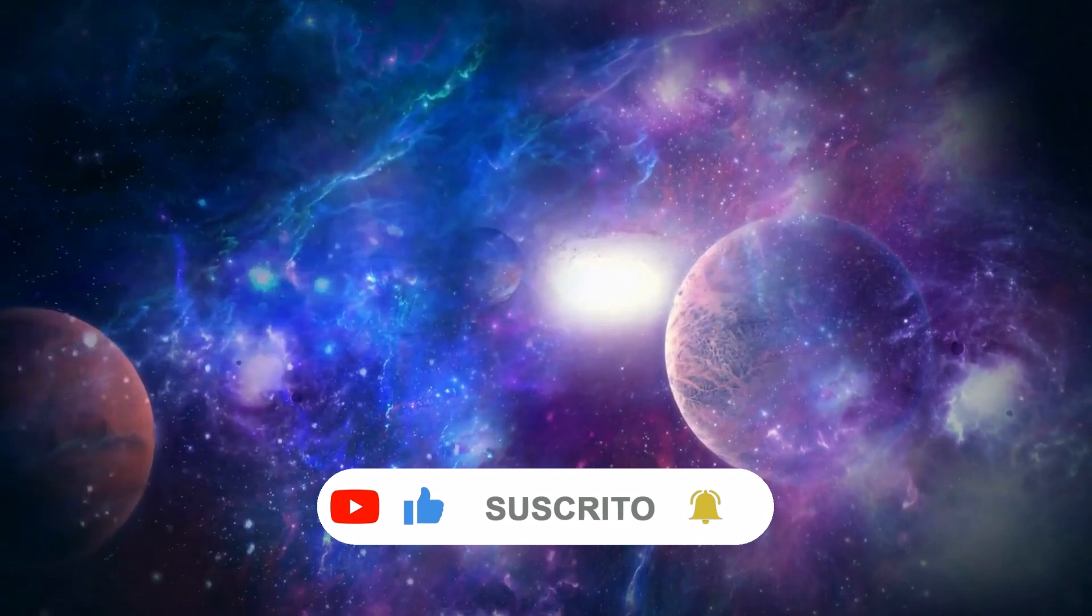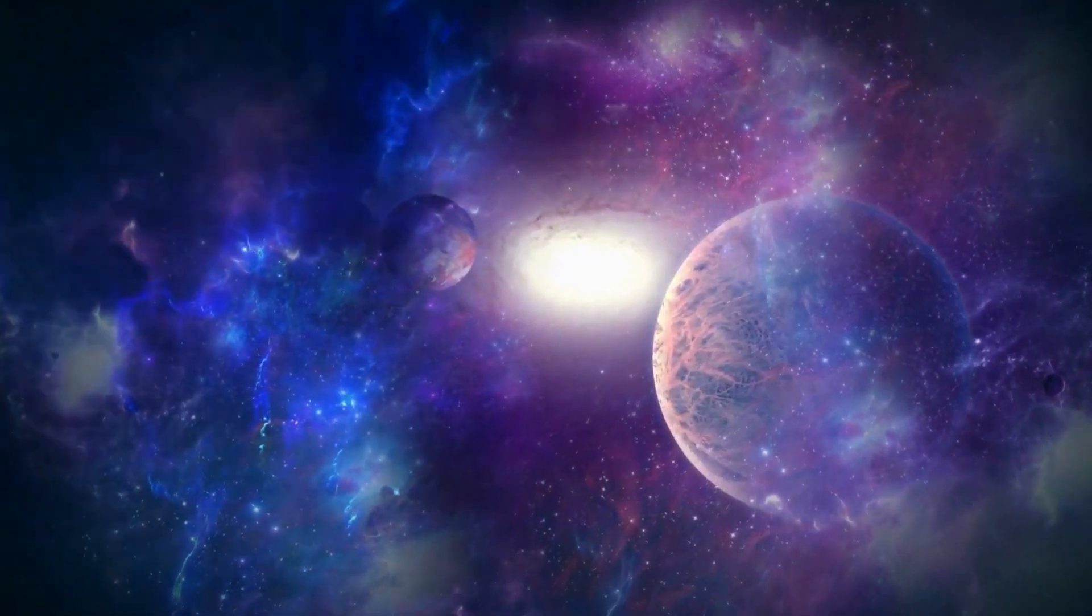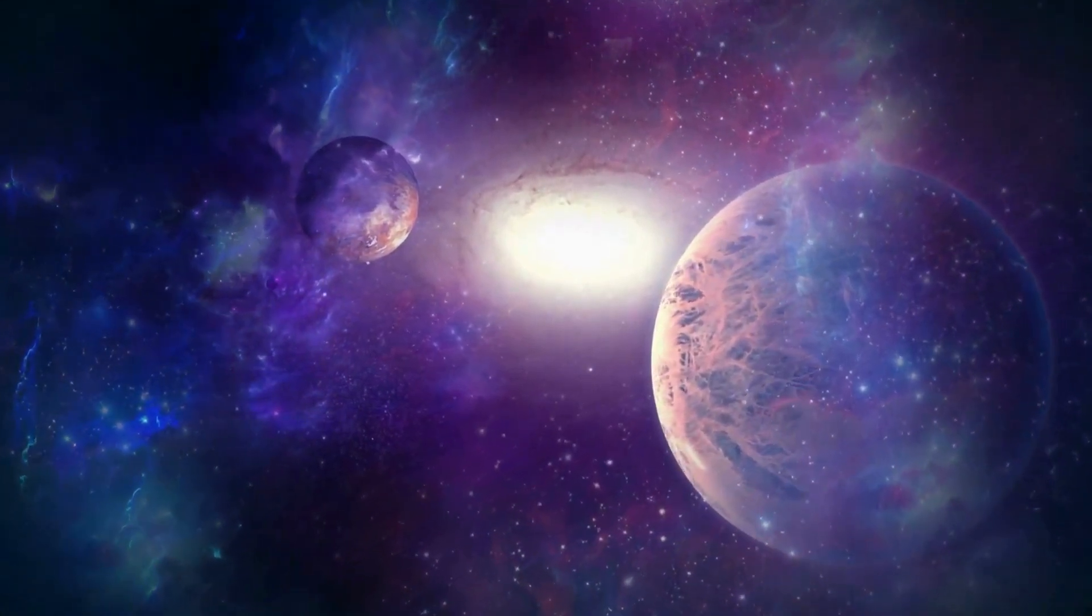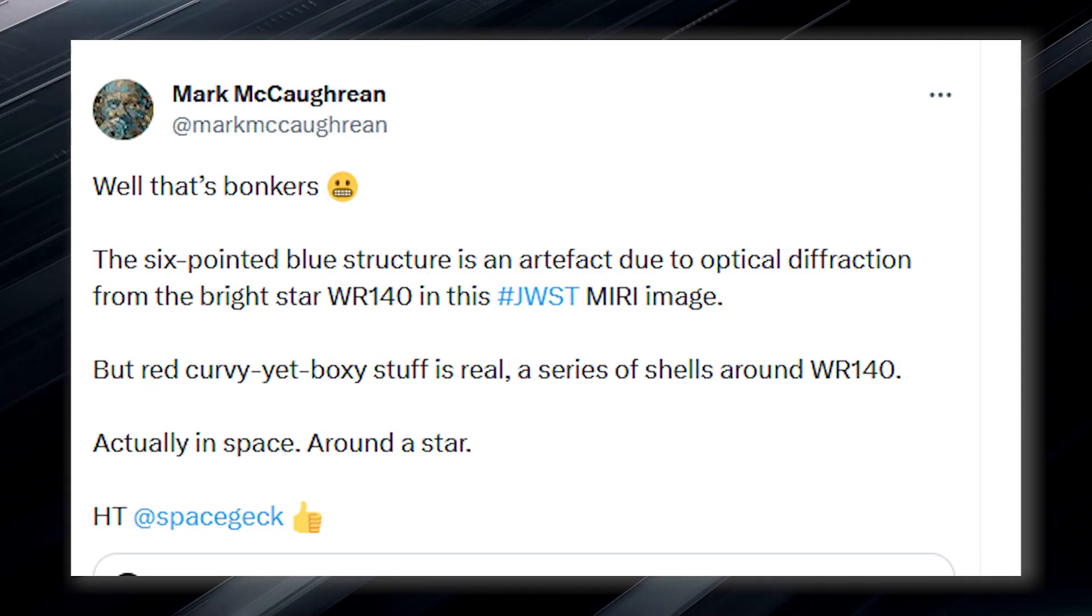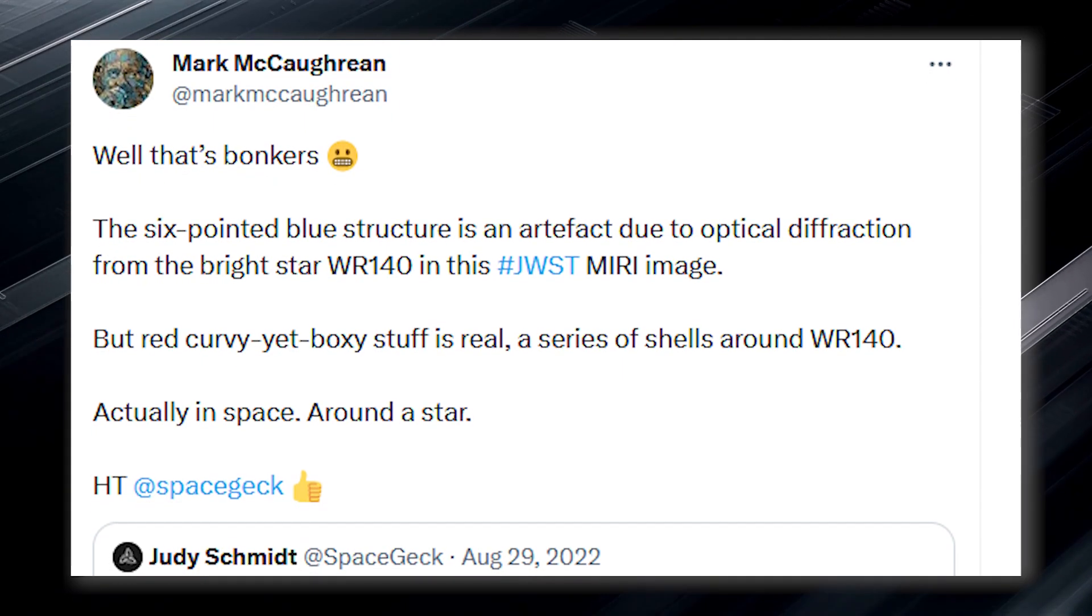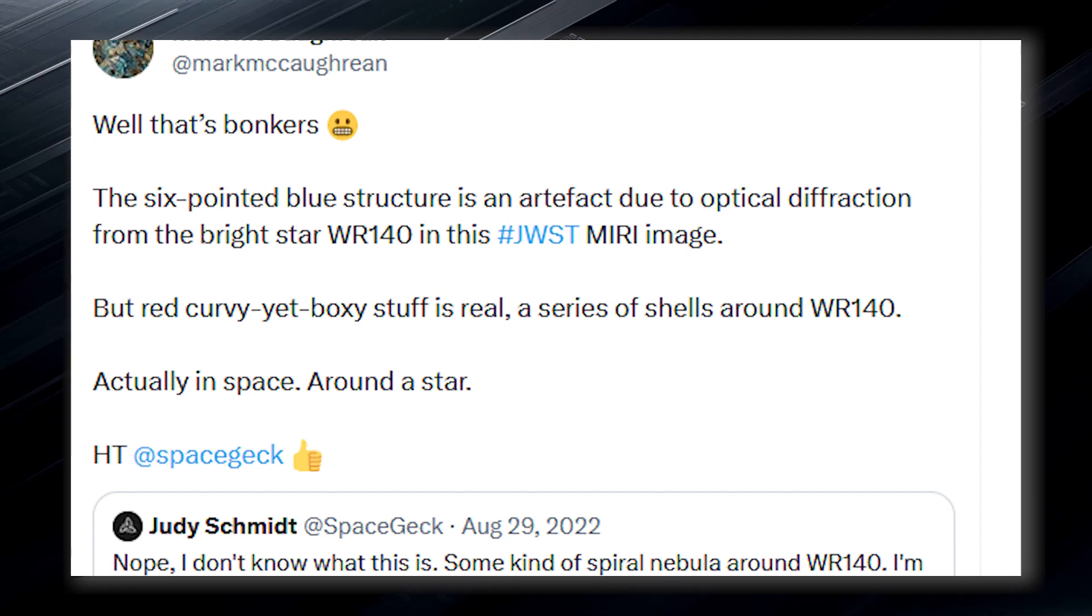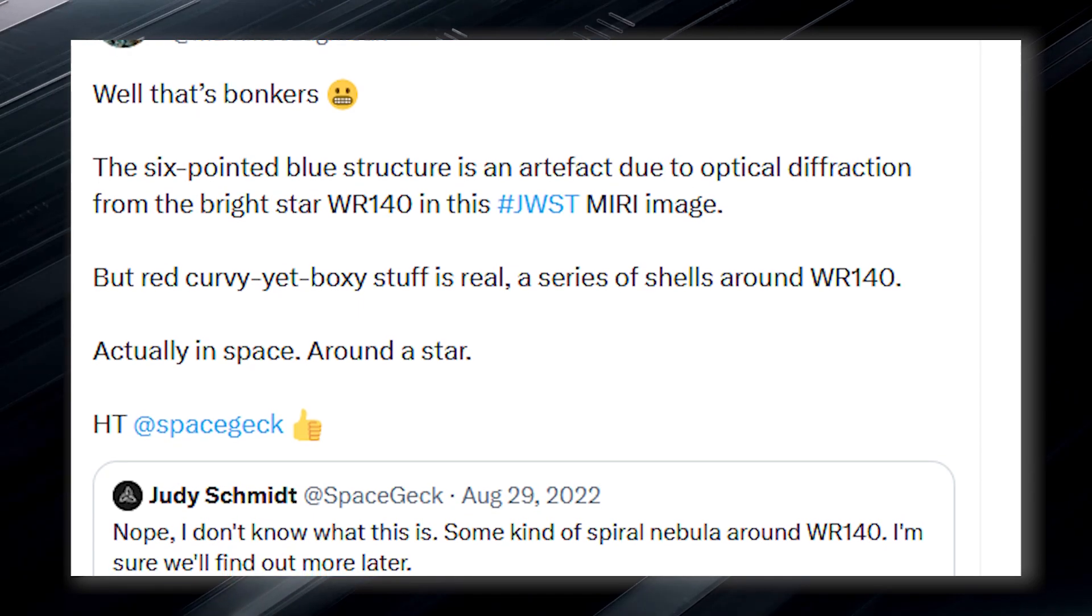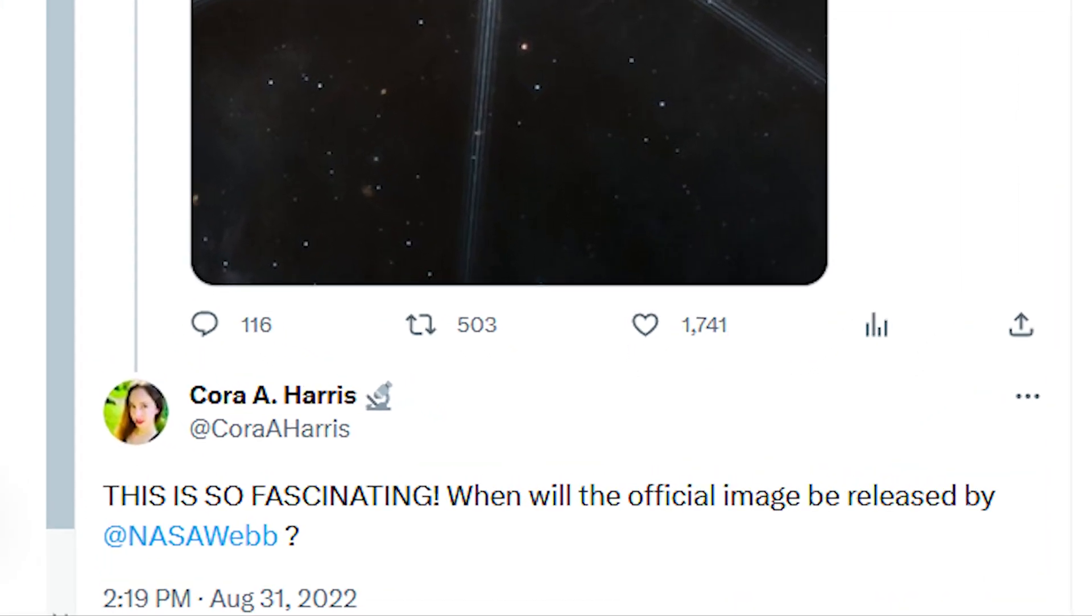These questions have troubled scientists like Smith, who was not the only one concerned about these puzzling images. Mark, an interdisciplinary scientist with JWST Science Working Group and a science advisor to the European Space Agency, called the feature wacky in a Twitter thread. He explained that the six-pointed blue structure is an artifact due to the optical diffraction from the bright star WR 140 in the image. However, he noted that the red curvature is real and represents a series of shells around WR 140 in space. Although NASA is expected to have something to say about this, it is expected to make a statement soon.